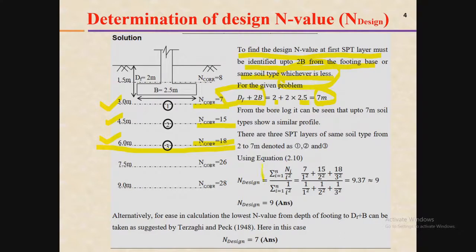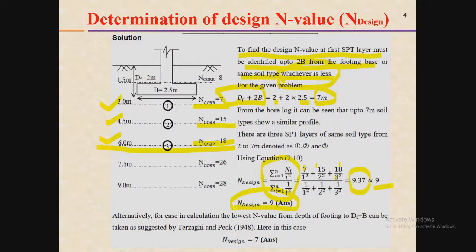Now let us feed all the data into the equation. The N values are 7, 15, and 18 for layers one, two, and three respectively. The i² values are 1², 2², and 3². Similarly, 1/i² values are 1/1², 1/2², and 1/3². Solving this equation gives a value of 9.37, which is approximately equal to 9. So the N_design value from this calculation is 9.